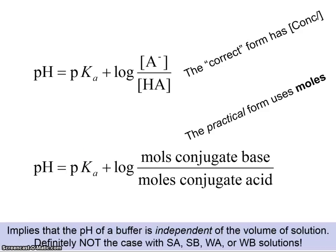That's a really neat property of buffers: a buffer will have a pH that's independent of the volume it's in. You can dilute a buffer and it won't change its pH, because you still have a significant ratio of moles. The mole ratio is what determines the pH of the buffer, not the actual volume and concentration. That is definitely not the case with a strong acid, strong base, weak acid, or weak base solution — if you dilute any of those, the pH will change.